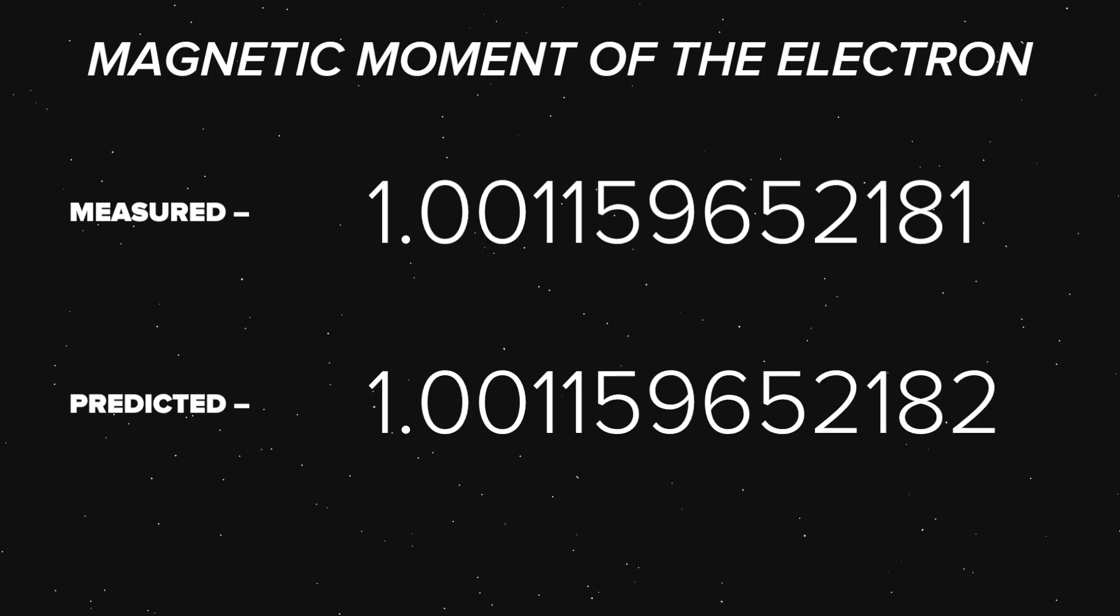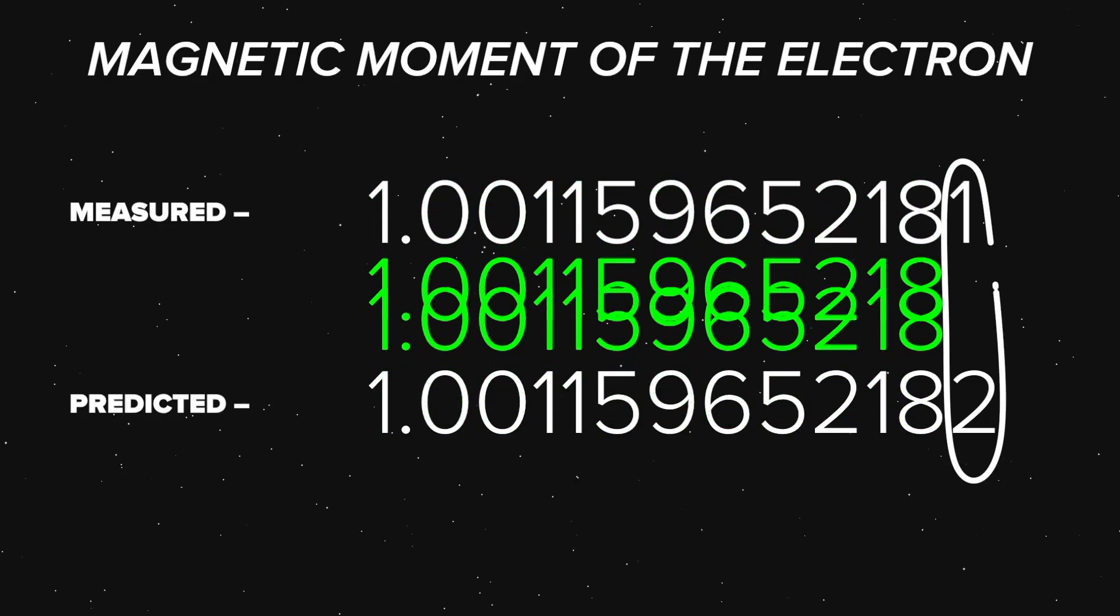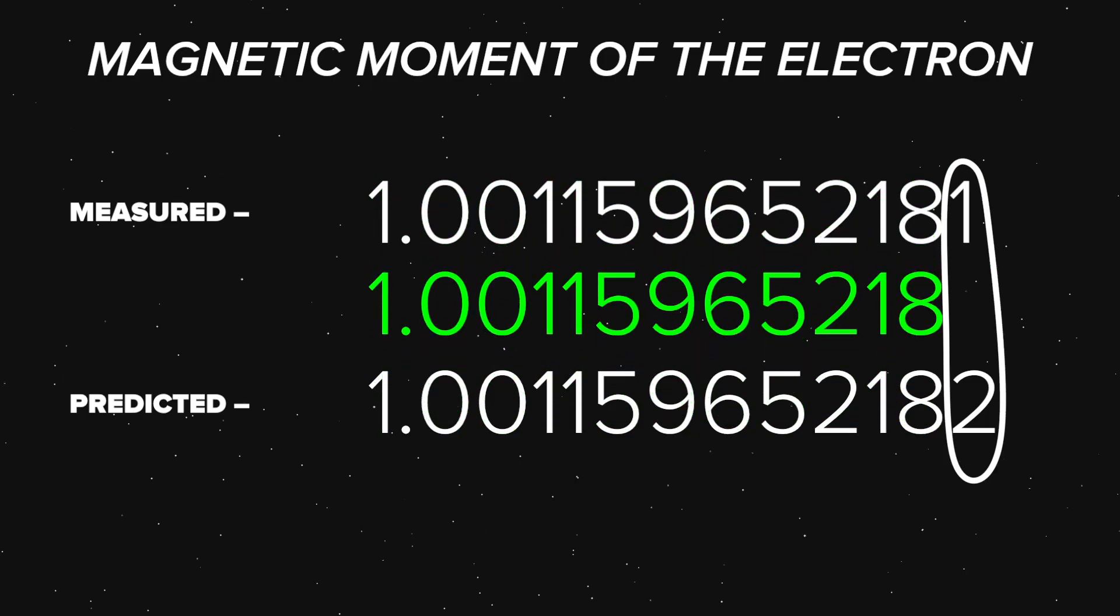You can see that the prediction and the measurement agree exactly, digit for digit, for twelve places. Where they start to disagree, it's due to known uncertainties in both the prediction and the measurement. In fact, within uncertainties, the two numbers agree.